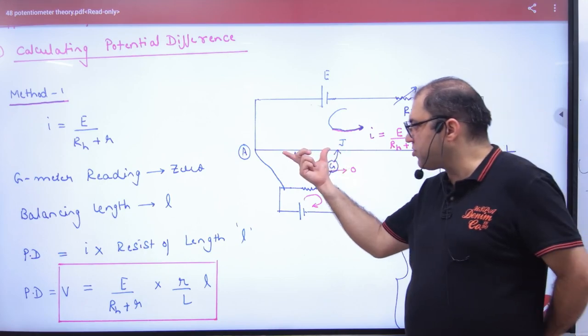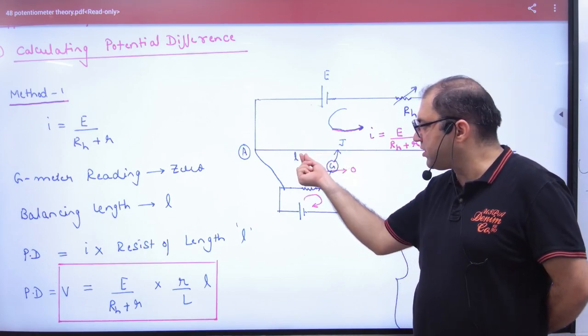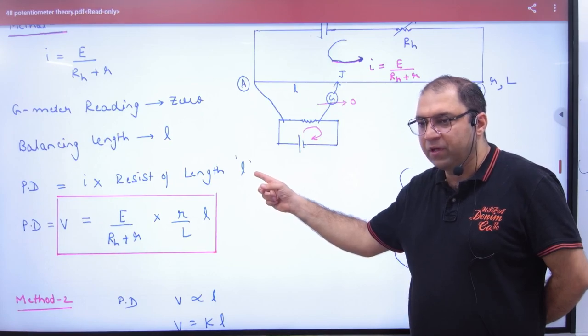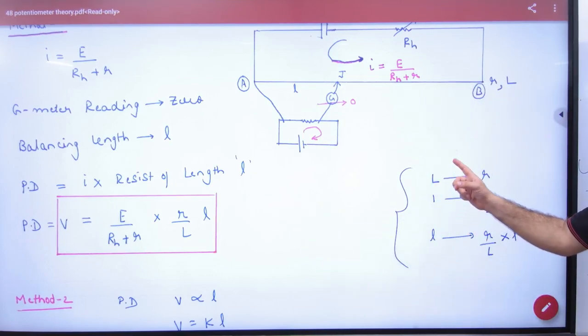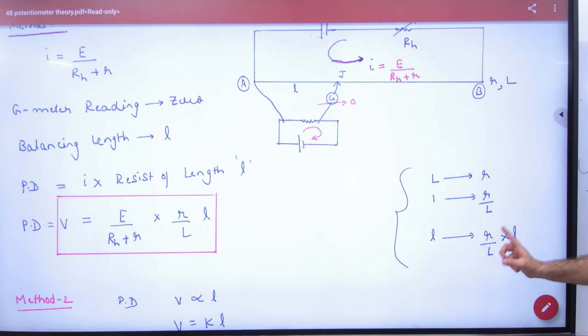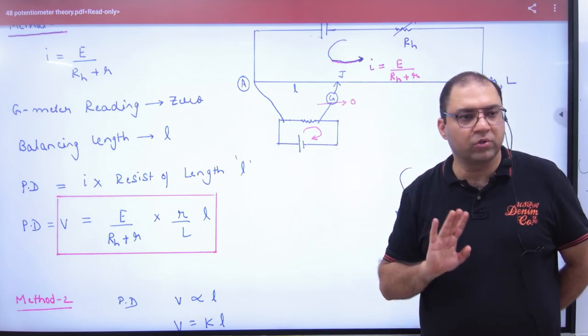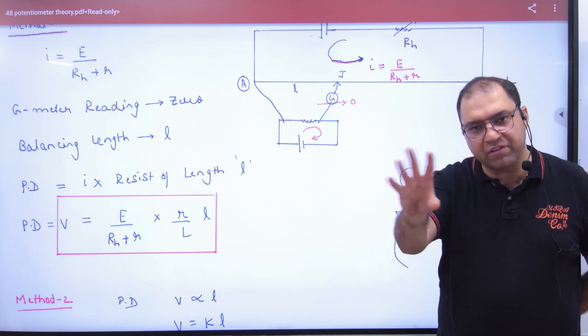What will be the potential difference here? V equals I times the resistance of length L. The resistance of small length l is (r/L) times l. So V = I times (r/L) times l. This is method number one.